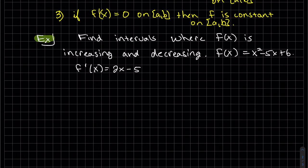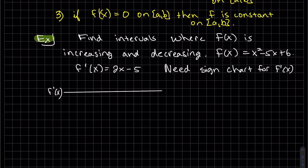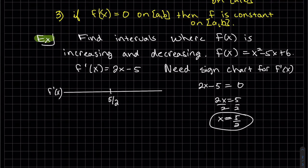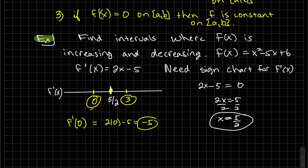For an example, we have to find the derivative, and to find out where the function is positive and negative we need a sign chart. Always label your sign chart with which function it is. Find your zeros by setting your function equal to zero. That zero is at x = 5/2. We test a point to the left, say zero, and a point to the right, say three.